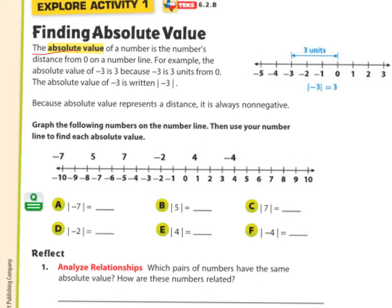The symbol is these two sticks surrounding the number. So if I want to say the absolute value of 12, I write two sticks with 12 inside. If I'm asking for the absolute value of negative 20, I put these sticks on the outside. How far from zero is 12? It's 12 units away — that's the absolute value of 12. What about negative 20? It is 20 units from zero, so the absolute value is 20. Notice both answers are positive because distances are always positive.